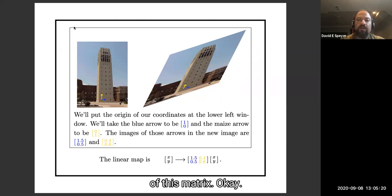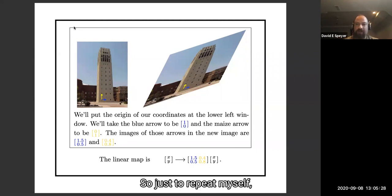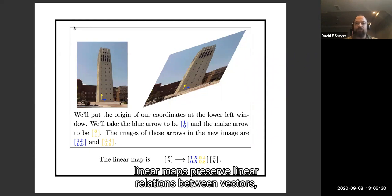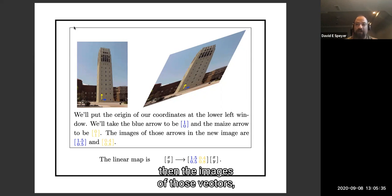That's what I wanted to say about thinking about linear maps and geometry in general. To repeat myself, linear maps preserve linear relations between vectors. If one vector is three times another, then the images of those vectors, one will be three times the other. If one vector is a sum of two other vectors, then the image of that vector will be the sum of the images of the other vectors.